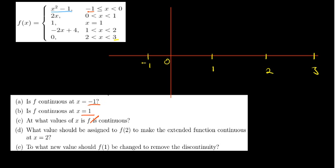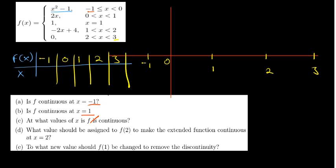The first piece is a quadratic function from -1 to 0. Let's build a quick table of values: x values of -1, 0, 1, 2, 3. For x = -1, the quadratic equation applies. Negative 1 is included due to the less-than-or-equal-to part. Substituting: (-1)² - 1 = 1 - 1 = 0, so we start at the point (-1, 0).